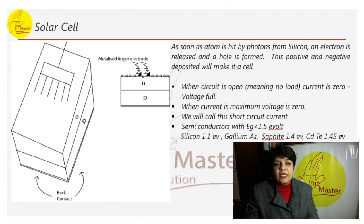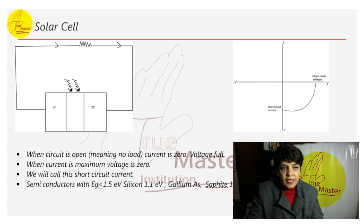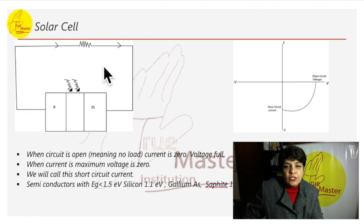When load is connected in this circuit, a current will flow and is proportional to the intensity. Here again, we are showing you the diagram in which the solar cell is working. When circuit is open, current is zero, voltage is full. When current is maximum, voltage is zero. We will call this short circuit current.